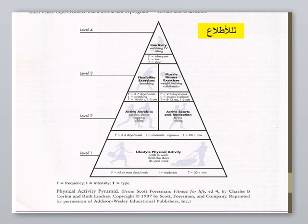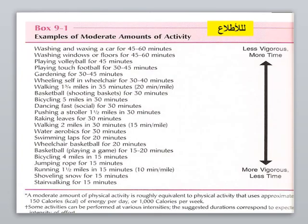The physical activity pyramid shows levels 1 through 4. Less vigorous activity for more time requires less energy expenditure, while more vigorous activity for less time requires more energy expenditure.